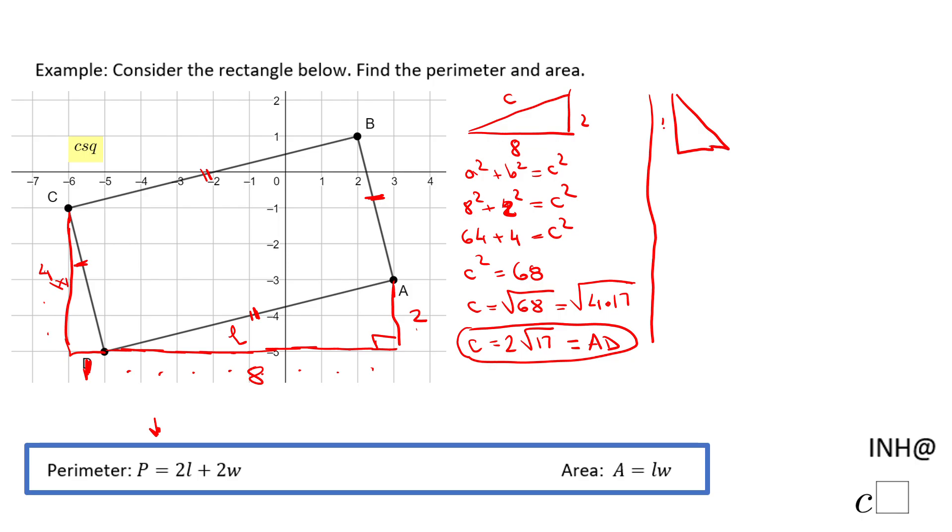This is four, this is one. Using the same formula, a² + b² = c², we have 4² + 1² = c². Four squared is 16, plus one squared is 1, equals c². So c² = 17.